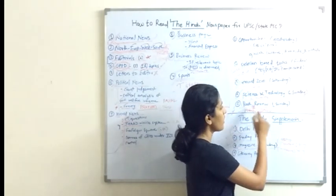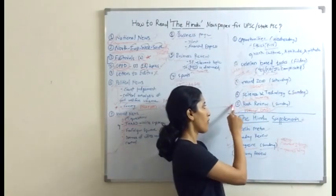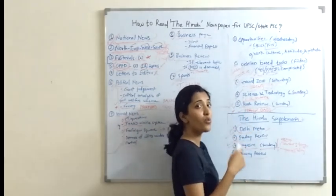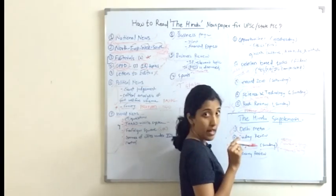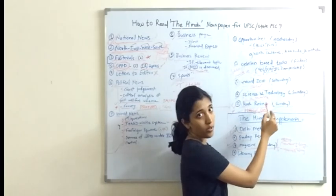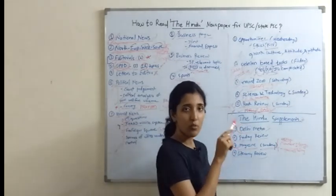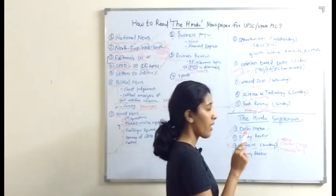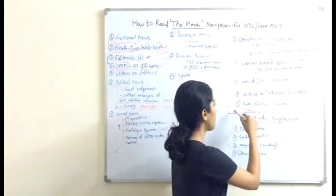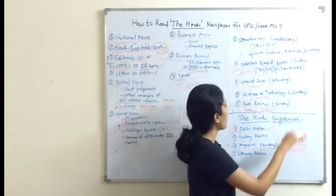On Sunday, the book review also comes. I will not recommend this section for everyone — only for those who have book reading as a hobby, or those who want to mention book reading as a hobby in their DAF. The DAF is the form you fill once you qualify for the prelims, before mains, in which you mention your hobbies. If you plan to give book reading as a hobby, you can read this section to get reviews of newly published books. Otherwise, for other people it is not relevant at all — you can skip it.